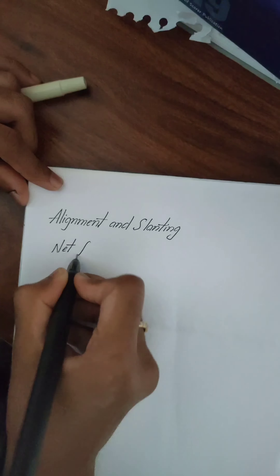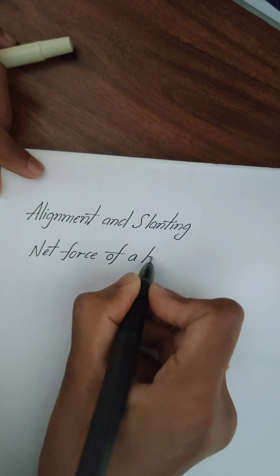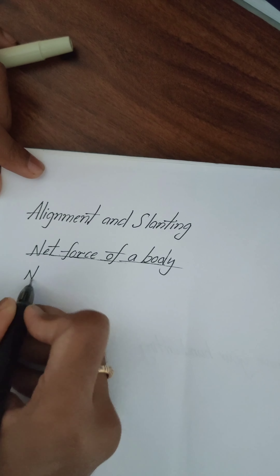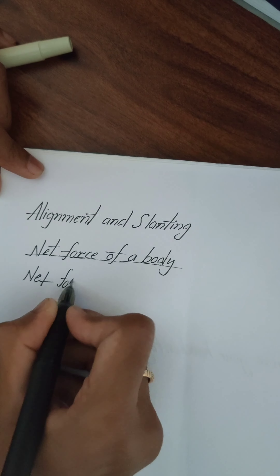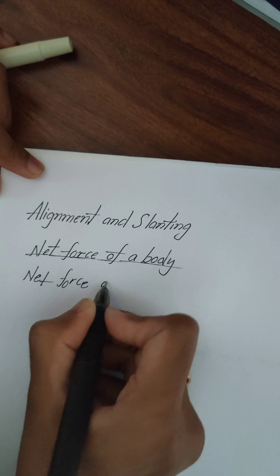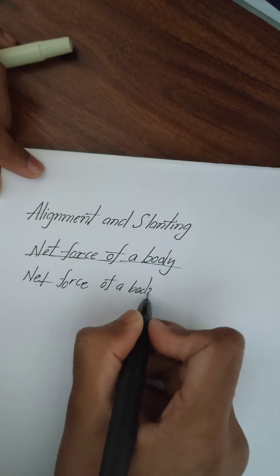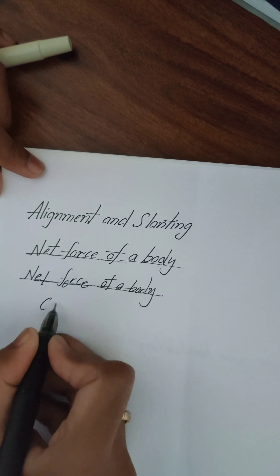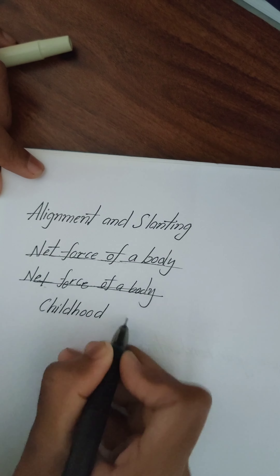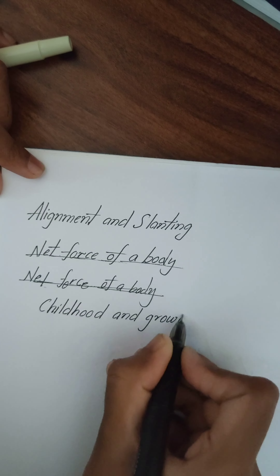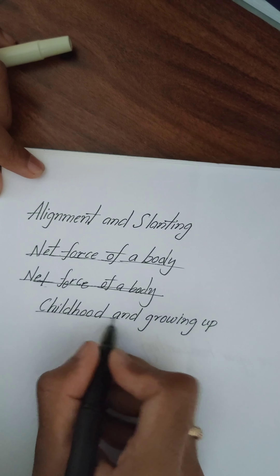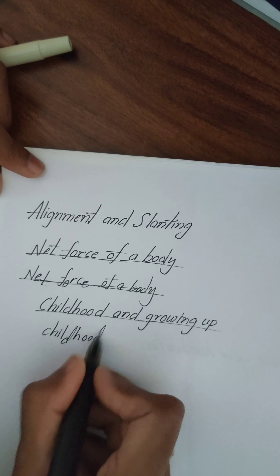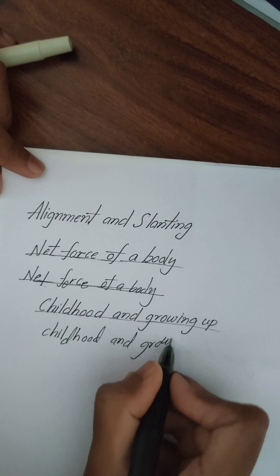Alignment and slanting. Alignment means arranging in a straight line. We have to arrange words and letters in a straight line and should not write upward or downward. In this example you can observe 'Childhood and growing up' — the words and letters are all in a straight line. In the second sentence it is not aligned like that.